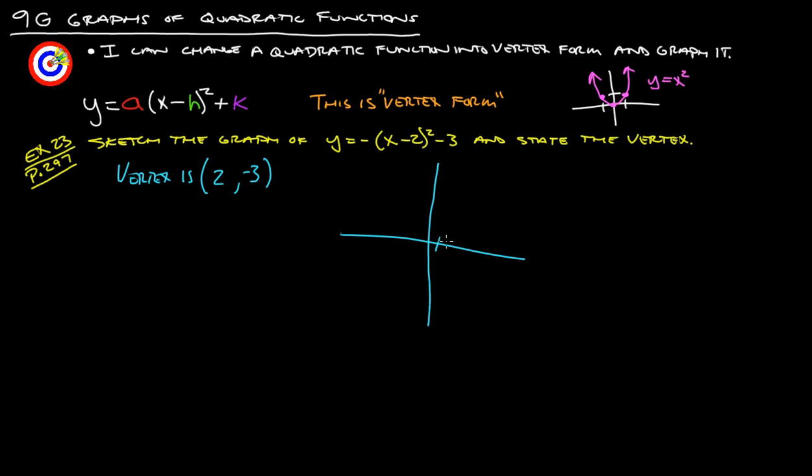So go to graph. That is just a terrible graph. Let's try that again. It's a little better. So our vertex is at negative 2, 3. Oh sorry, at 2 negative 3. So we're at 2 negative 3. There's our vertex.